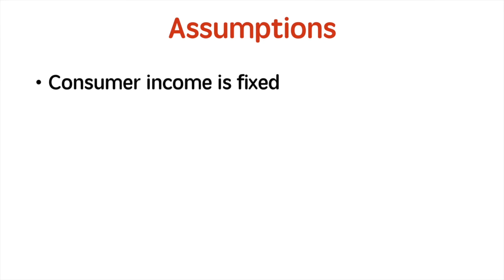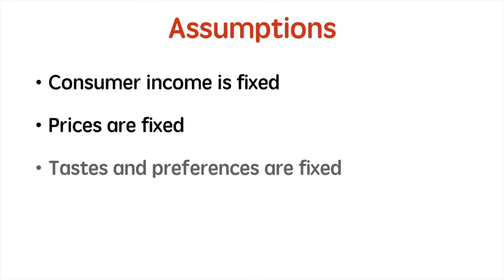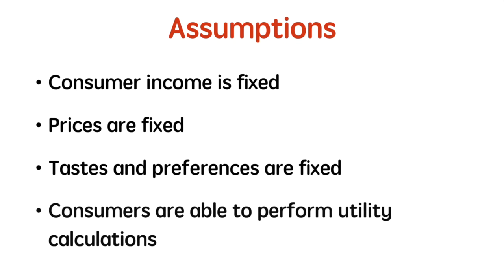Before we learn more about the equimarginal principle, we must set a few assumptions. First, consumer income is fixed and held constant. Prices do not change, and neither do tastes and preferences. We also make a significant assumption that consumers are able to perform utility calculations for multiple goods. In reality, this is far from the case. There are many reasons why consumers may not engage in rational behavior, but we will examine that in the video following this one.